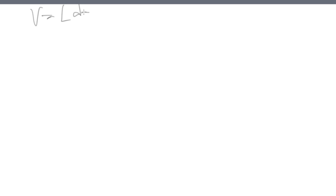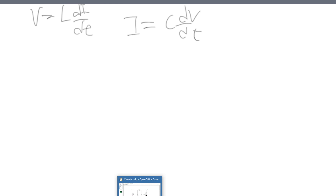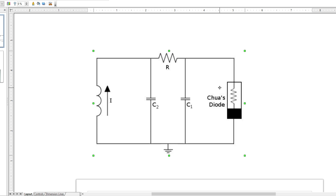The voltage in an inductor is given by V equals L di/dt. The current in a capacitor is given by I equals C dv/dt. This derivation makes use of Kirchhoff's circuit laws: the sum of all voltages in any closed loop in a circuit will always equal zero, and the junction rule — the current going into a junction equals the current coming out.